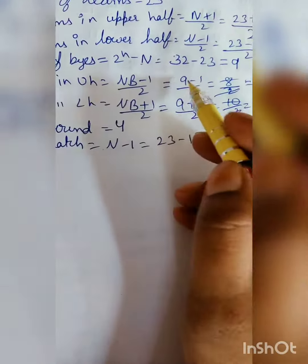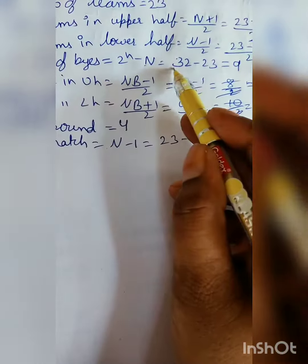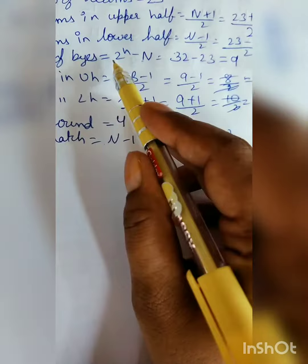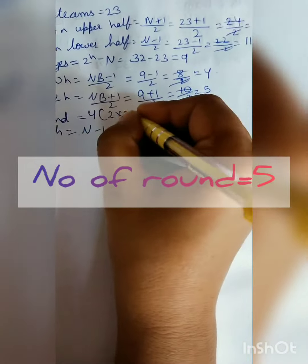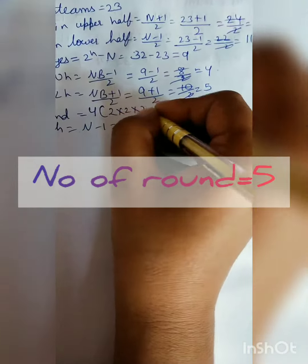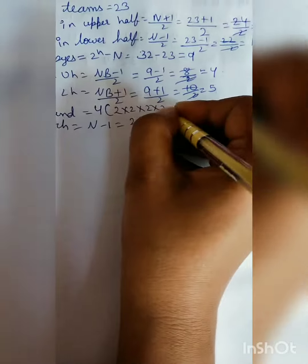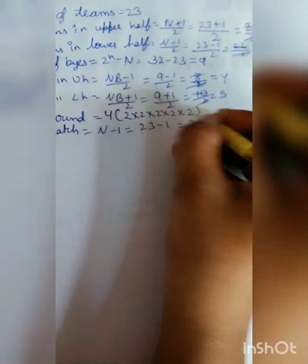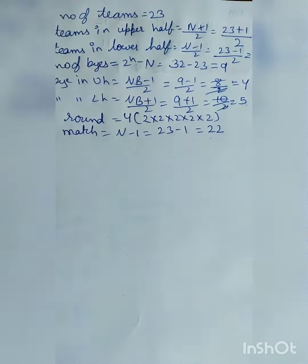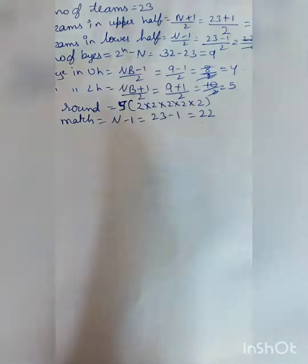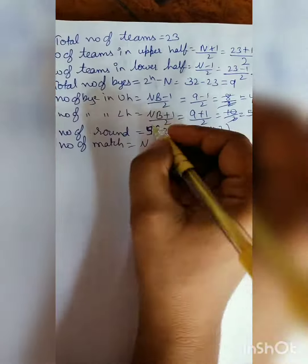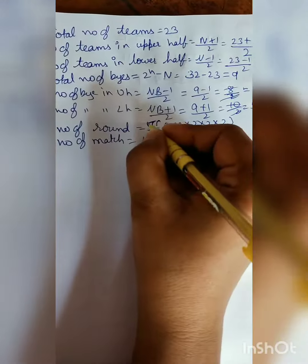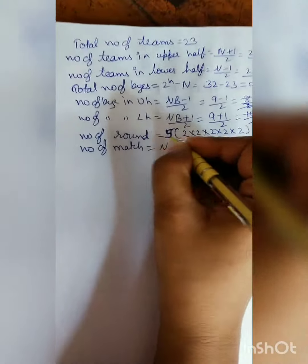Number of rounds: as we took 32 here, 2 to the power 4. We do it like this: 2, 2 to 4, 4 to 8, 8 to 16, 16 to 32. Counting: 1, 2, 3, 4, 5. So the number of rounds will be 5. Let's start.